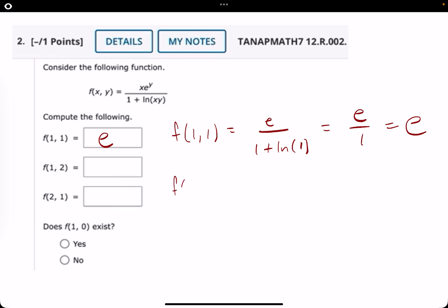Now, f of 1, 2. If we plug in 1 and then 2, we get e squared. And then we have 1 plus ln of 1 times 2, so that would be ln of 2. Now, this, you'd probably just leave like that. There's no simplifying any of those terms, really.